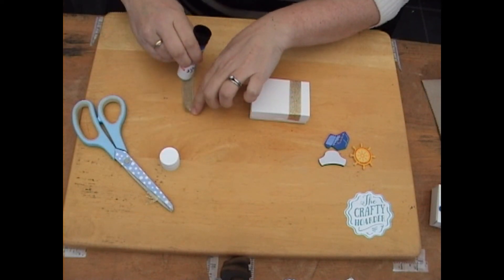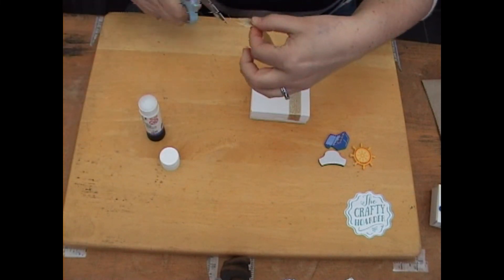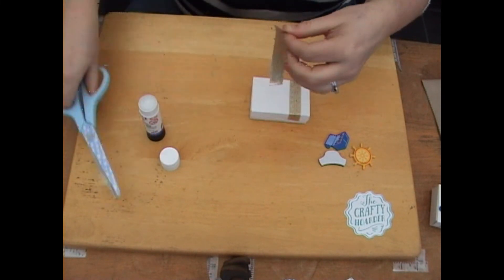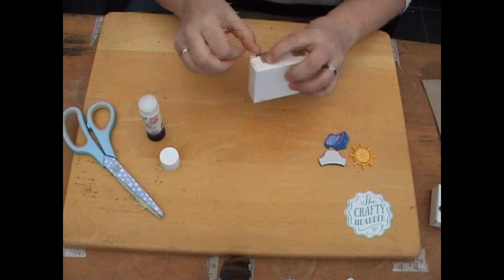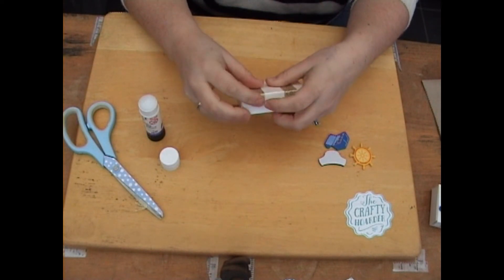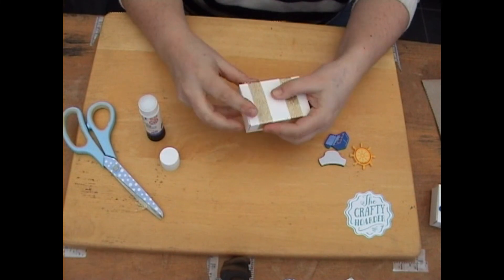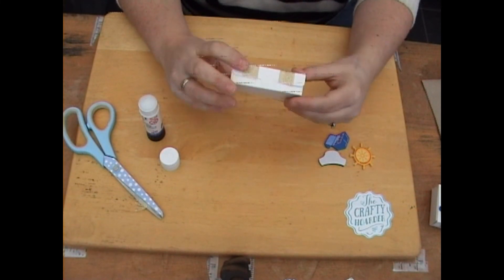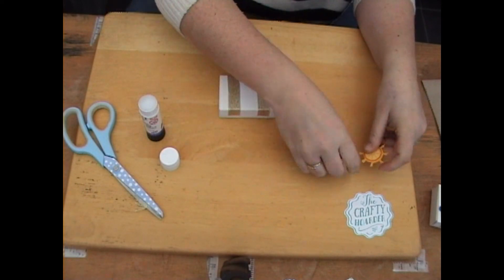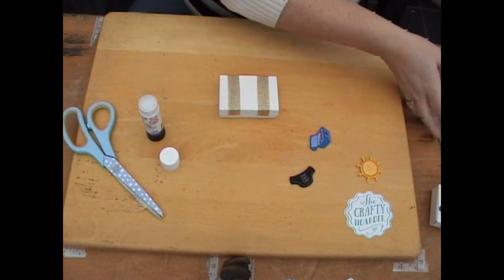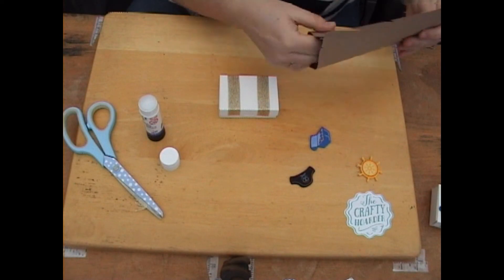You can put the glue onto the box but I have found it's easier to glue the ribbon and then stick it on. Same again, opposite sides, so it looks like the lovely bits of metal over the top of the treasure chest to keep it secure.